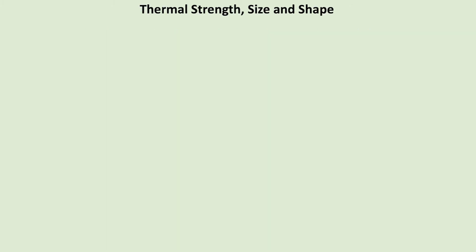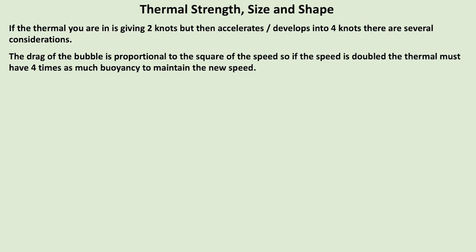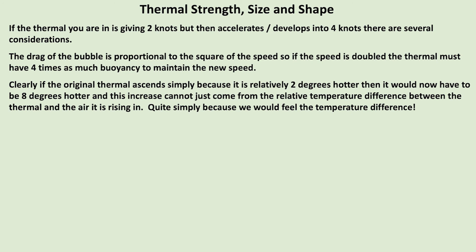Thermal strength, size and shape. If the thermal you are in is giving two knots but then accelerates and develops into four knots, there are several considerations. The drag of the bubble is proportional to the square of the speed. So if the speed is doubled, the thermal must have four times as much buoyancy to maintain the new speed. Clearly, if the original thermal ascends simply because it is relatively two degrees hotter, then it would now have to be eight degrees hotter — and this increase cannot just come from the relative temperature difference between the thermal and the air it is rising in.